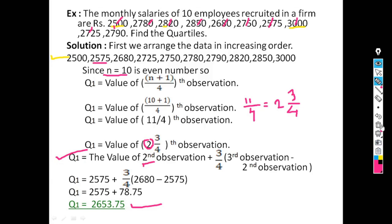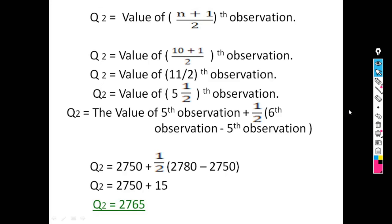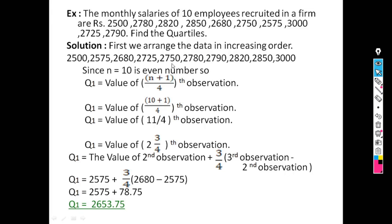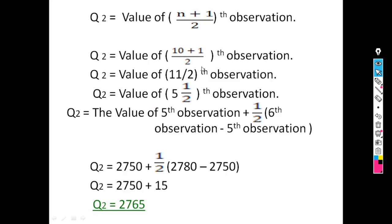For Q2: value of (10+1)/2 = 11/2 = 5½-th observation. So Q2 = value of 5th observation + (1/2) × (6th observation − 5th observation) = 2750 + (1/2) × (2780 − 2750) = 2765.